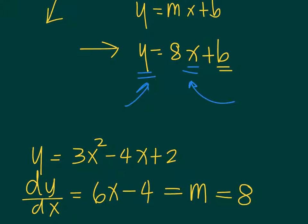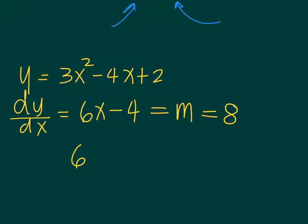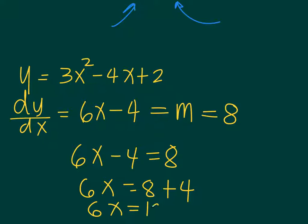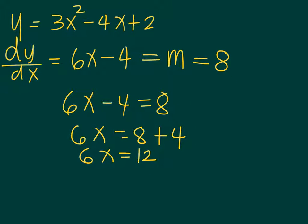Because that is the m, the slope of the tangent line. So what will that give us? 6x minus 4 is equal to 8 will allow us to find the value for x. So 6x is equal to 8 plus 4. So 6x is equal to 12. And x is equal to 2. So the point is 2 and then the y is still unknown.